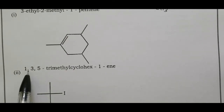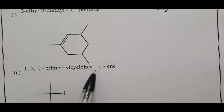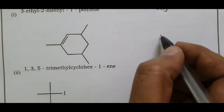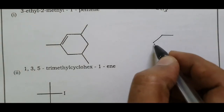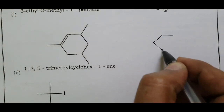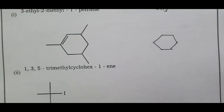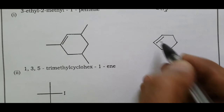Compound number two: 1,3,5-trimethylcyclohexene. Cyclohexene is the parent ring with one double bond. The ring has six carbons.